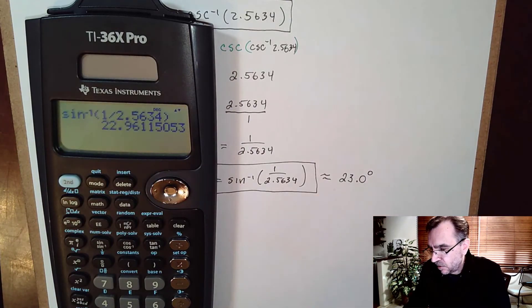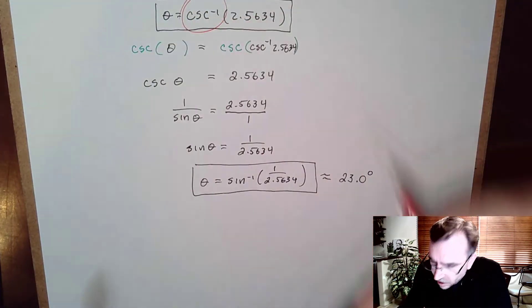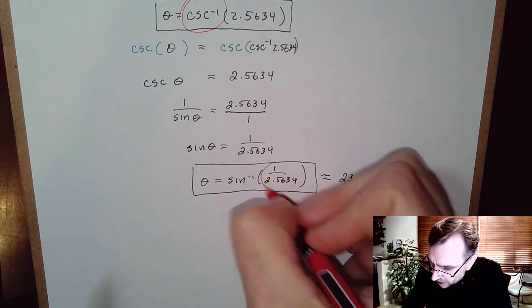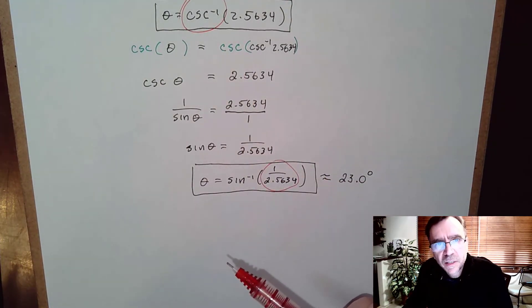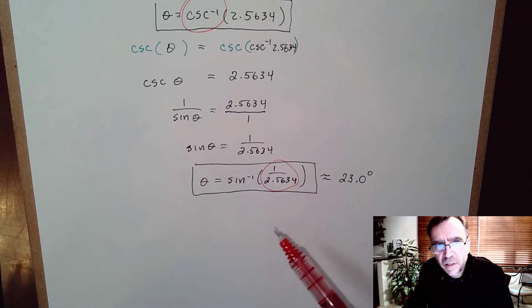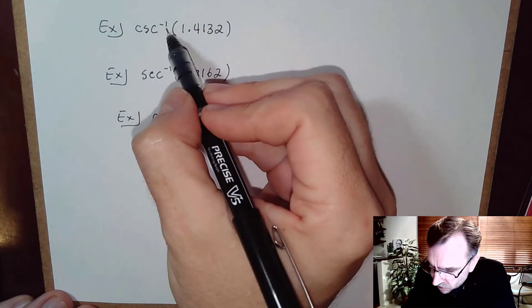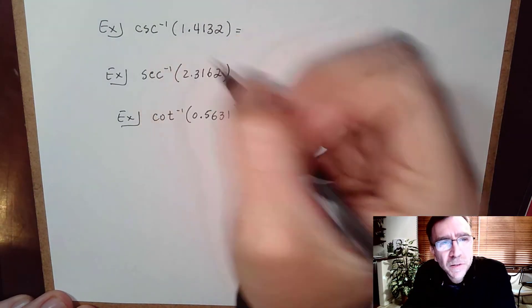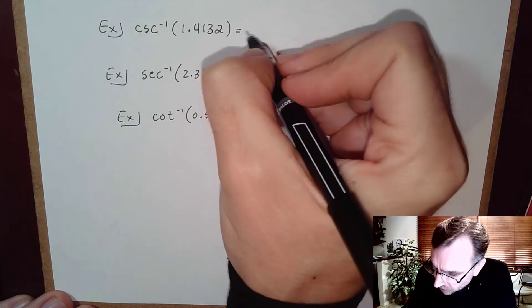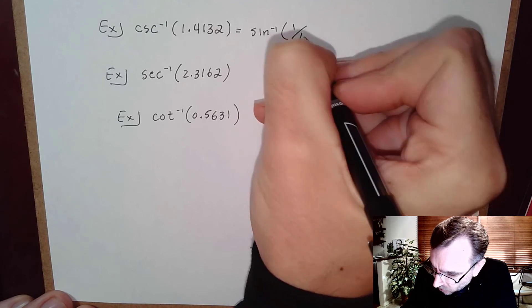The key idea: to calculate the inverse of a reciprocal function, use the inverse of the associated base trig function applied to 1 over the given number. For example: cosecant inverse of 1.4132 — cosecant is 1 over sine, so we use sine inverse of 1 over 1.4132.